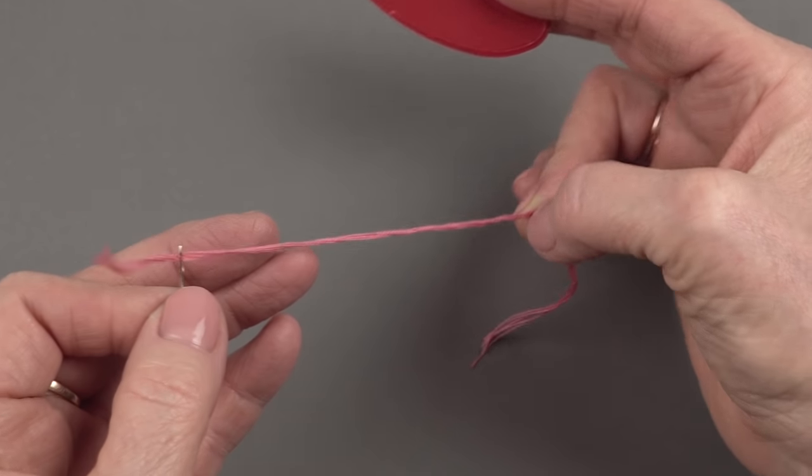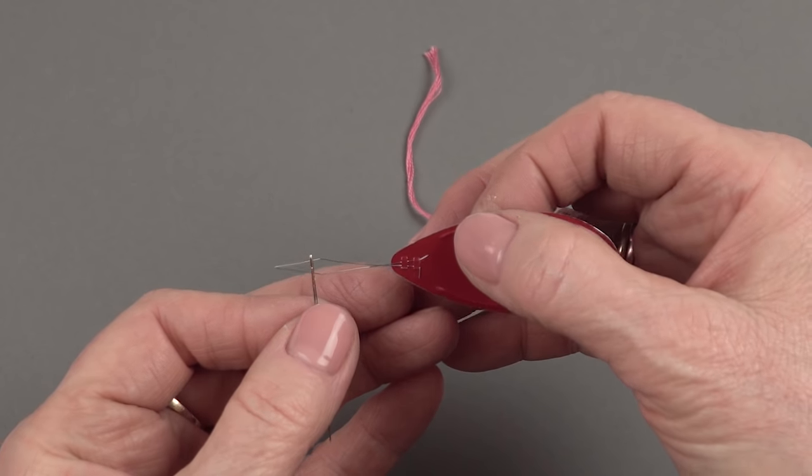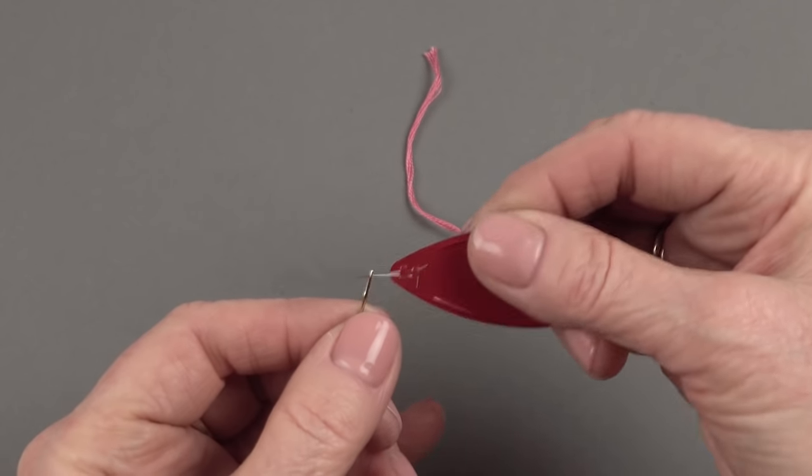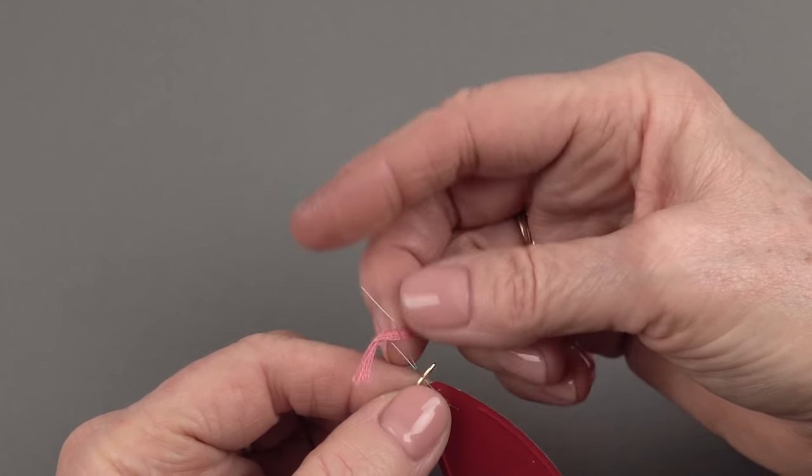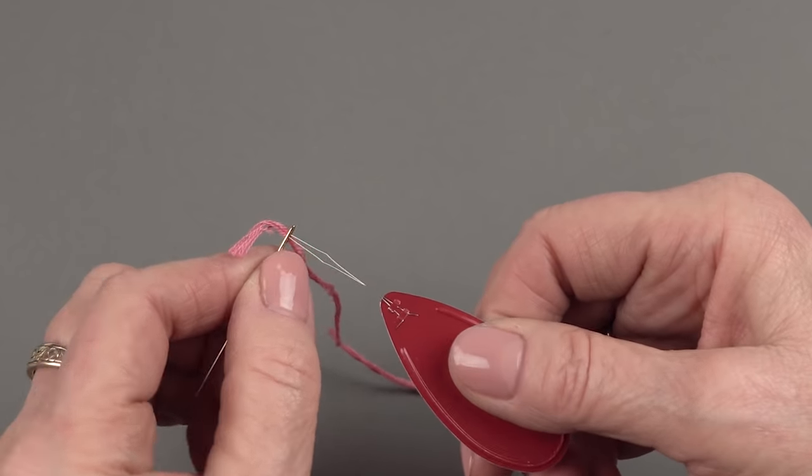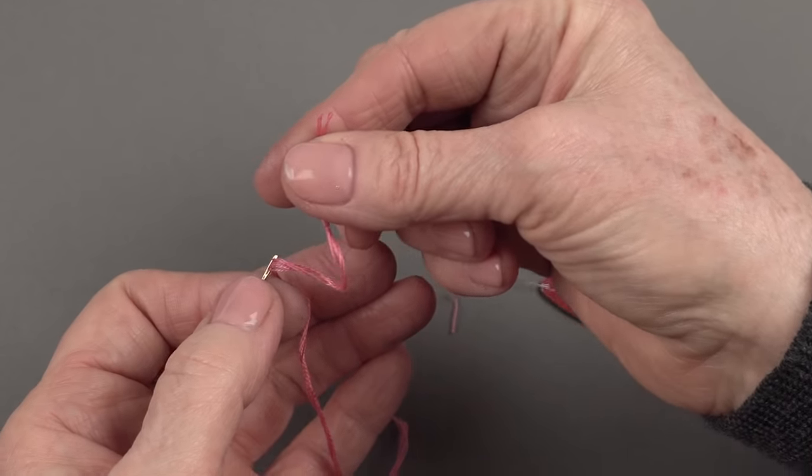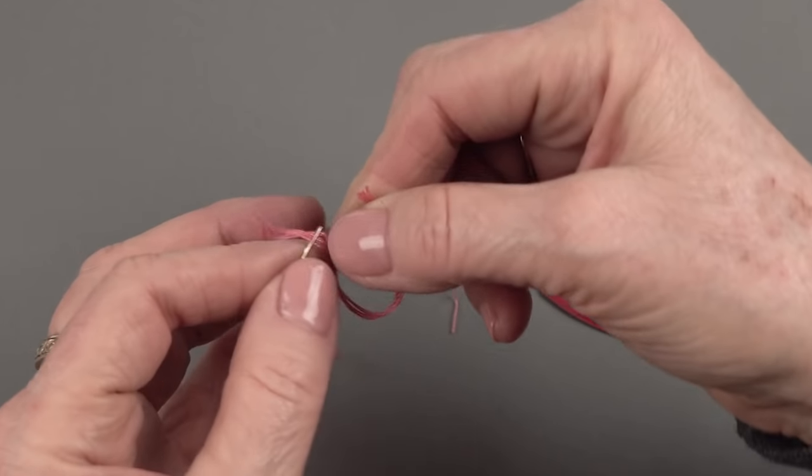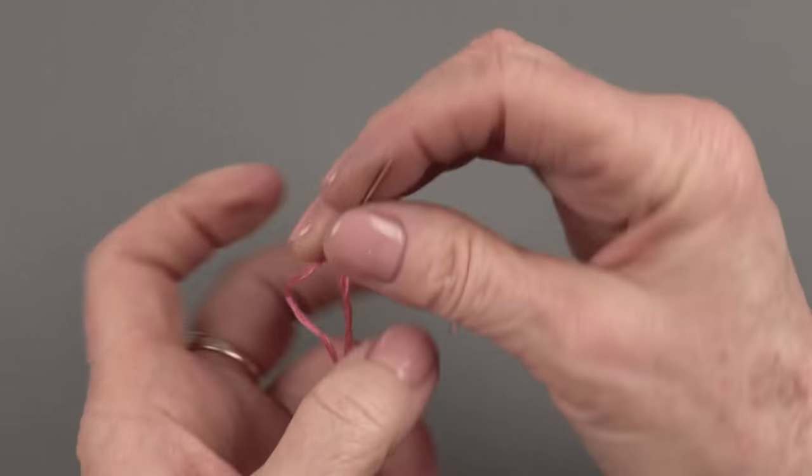They come in many different kinds, but that's what this one is. A needle threader is great. You just stick the little wire piece through the eye of the needle and then you stick your floss in the knot and then pull it through. It makes it really easy, otherwise you're struggling to get all those little threads lined up and through the needle at the same time. It's kind of a pain. So now you've got the needle threaded.